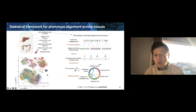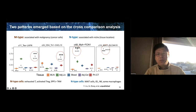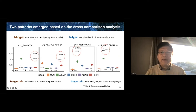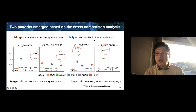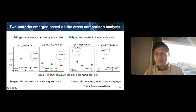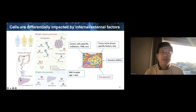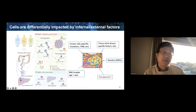By doing this, we found two different patterns from the cross-comparison. We define some types as M-type, associated with malignancy or cancer cells — including exhausted T-cells, Th1-like cells, activated T-regs, and SPP1 TAMs. Those cells seem to be more influenced by the cancer cells themselves. Other immune cell types we define as N-type, associated with tissue location — including mast cells, intraepithelial leukocytes, NK cells, and some macrophage subsets. So cells can be differentially impacted by various internal and external factors.